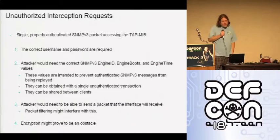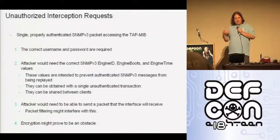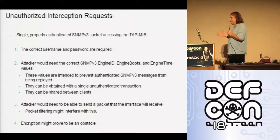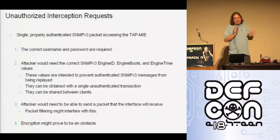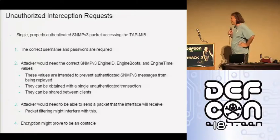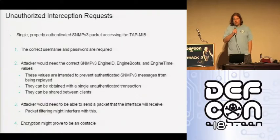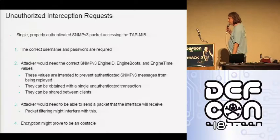To accomplish this attack, you have to send an unauthorized interception request — a single UDP packet, an SNMPv3 request. It needs the correct username and password, plus the SNMPv3 engine ID, engine boots, and engine time values. Those three numbers prevent replay of requests. You can get them from the router as long as you can talk SNMP to it — you don't need a username or password, it will hand them out to anyone who asks. It doesn't matter what source address you're coming from. Since it's a single UDP packet, it can be spoofed, though there are caveats. Encryption might also prove to be an obstacle — I emphasize 'might.'